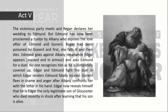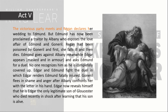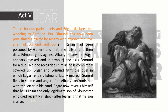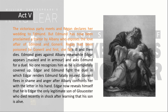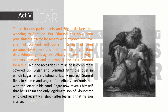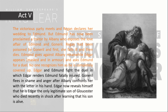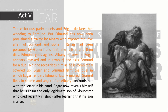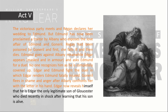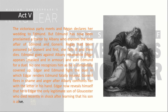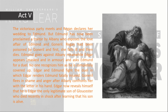Act 5: The victorious party meets and Regan declares her wedding to Edmund. But Edmund has been proclaimed a traitor by Albany, who exposes the love affair of Edmund and Goneril. Regan had been poisoned by Goneril — she first falls ill and then dies. Edmund goes against Albany, meanwhile Edgar appears masked and in armor and asks Edmund for a duel. No one recognizes him as he is completely covered up. Edgar and Edmund fight the duel in which Edgar renders Edmund fatally injured. Edgar now reveals himself as the only legitimate son of Gloucester, who died recently in shock after learning his son is alive.